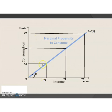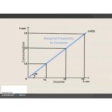The consumption curve initiates from the origin. This 45-degree line shows a perfect positive correlation between income and consumption expenditure. The slope of the consumption curve is the marginal propensity to consume.